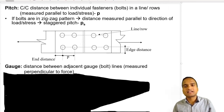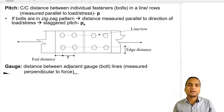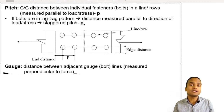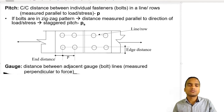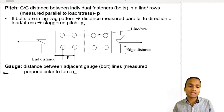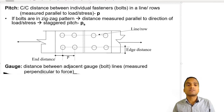Hello and welcome, dear students. By now we have understood different types of joints and different types of failures associated in joints, specifically riveted connections and bolted connections. We are going to see how to analyze bolted connections and how to calculate the strength of bolted connections, which we can do by understanding a few more parameters of a joint.